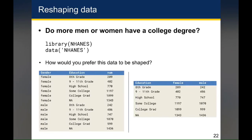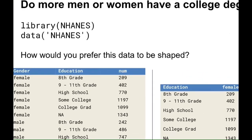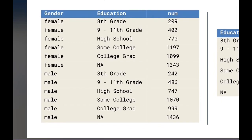Let's say you wanted to answer the question: do more men or women have a college degree? How would you prefer this dataset to be shaped? Let's start by loading the dataset using library(NHANES) and then data(NHANES), and take a look at the dataset. In this dataset there are three columns: gender, education, and num. If you wanted to answer whether more men or women have a college education, you would actually need to compare across multiple rows. After a lot of looking, I find there are 1,099 women and 999 men who have a college degree.